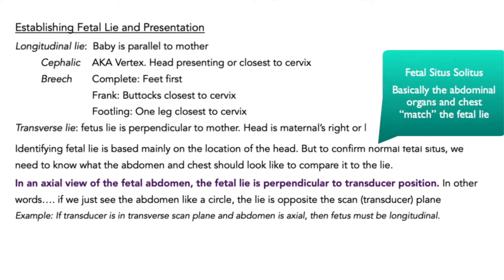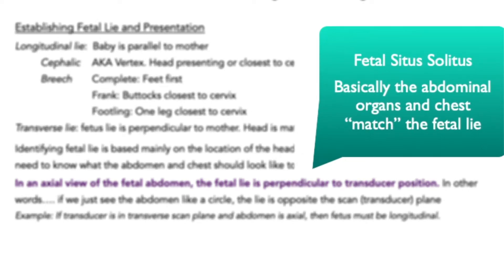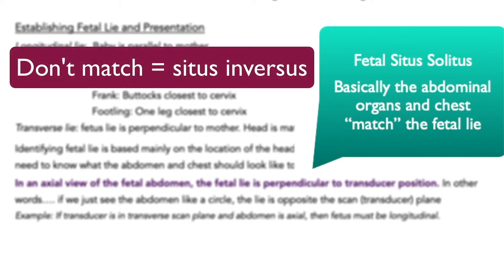What is fetal situs? Fetal situs is when we're looking at the abdominal and chest organs and matching them to the fetal lie. If everything matches, then we call it situs solitus. If they don't match, that indicates the baby has some form of situs inversus, with the abdominal organs and/or the heart being on the wrong side of the fetus.